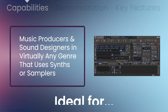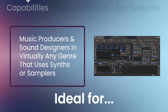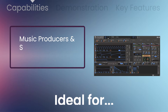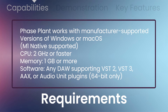Ideal for music producers and sound designers in virtually any genre that uses a synth or sampler. Phase Plant works with manufacturer-supported versions of Windows or macOS. M1 native is supported. You'll need a 2GHz or faster CPU, 1GB or more of memory, and any DAW supporting VST2, VST3, AAX or Audio Unit plug-ins — 64-bit only.